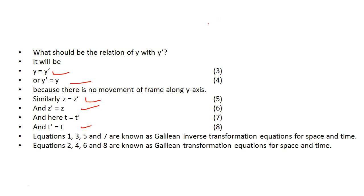Equations 1, 3, 5, 7 are known as Galilean inverse transformation equations for space and time. Equations 2, 4, 6 and 8 are known as Galilean transformation equations for space and time.